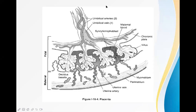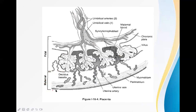Structurally, there are two umbilical arteries and one umbilical vein inside the umbilical cord. The cord is attached to the fetal side of the placenta. The placenta has two components: a maternal side and a fetal side. The fetal component mainly comprises the chorionic plate and chorion frondosum.